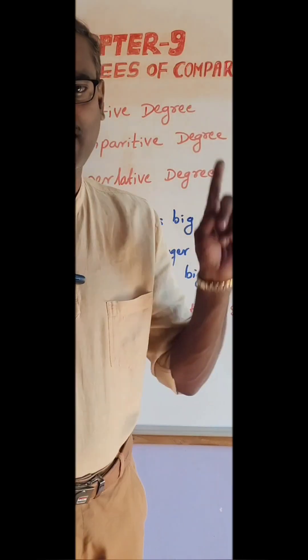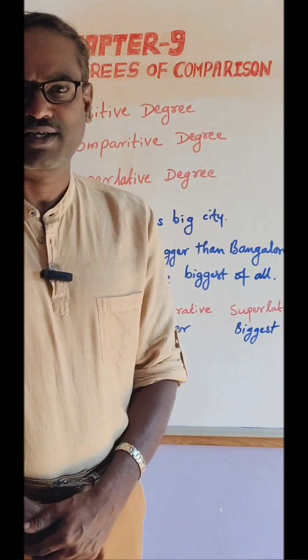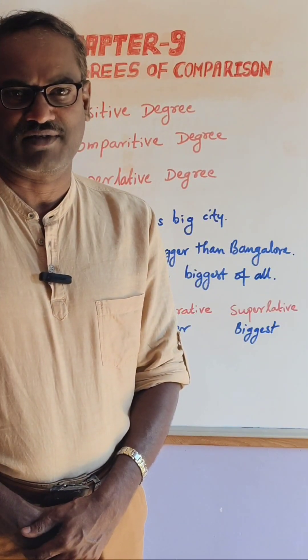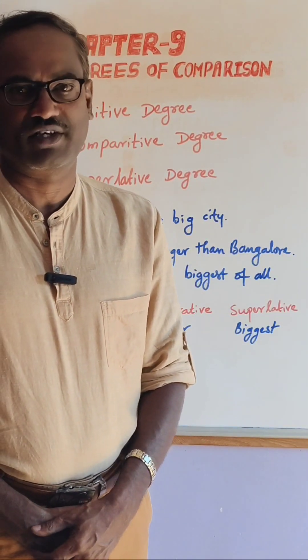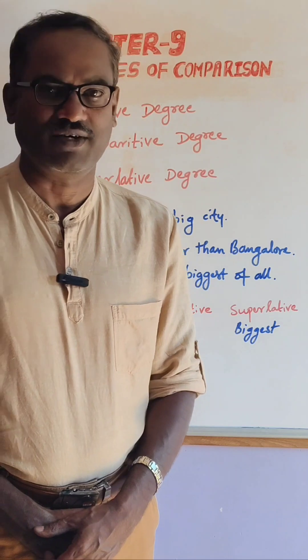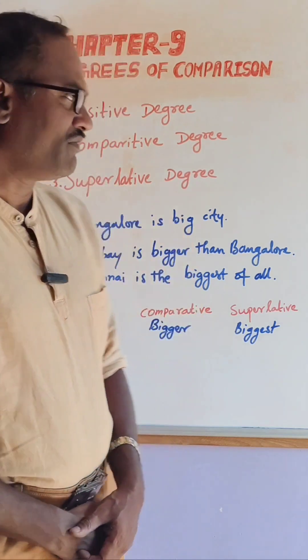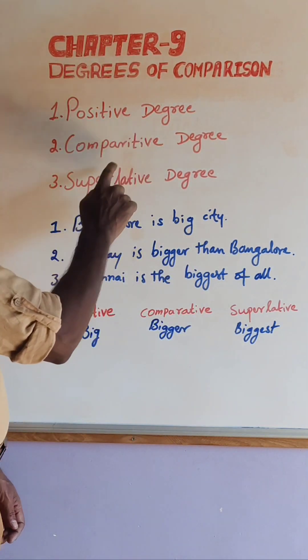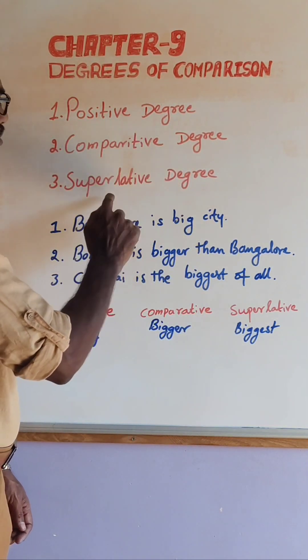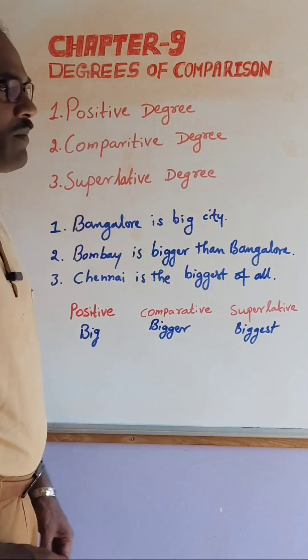Let us go to chapter 9: Degrees of comparison, or comparison of adjectives. There are three degrees: positive degree, comparative degree, and superlative degree.